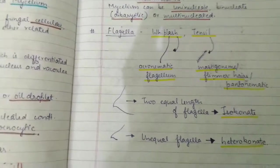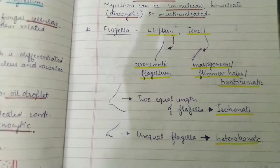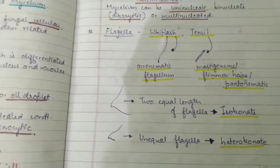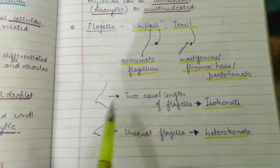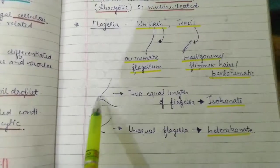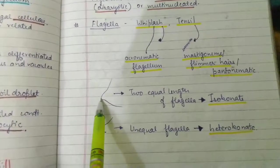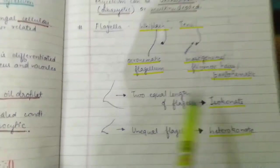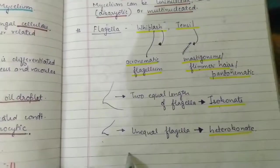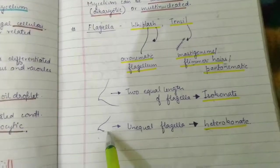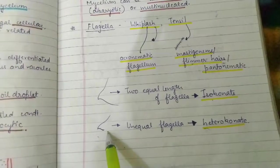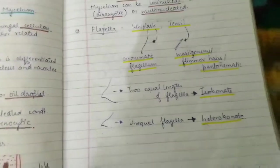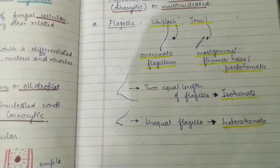When two flagella of equal size, equal length, and equal type occur together — such as on a zoospore — this is called isokont. If the two flagella are of different types or unequal length, they are called heterokont. So: equal flagella = isokont; unequal flagella = heterokont.